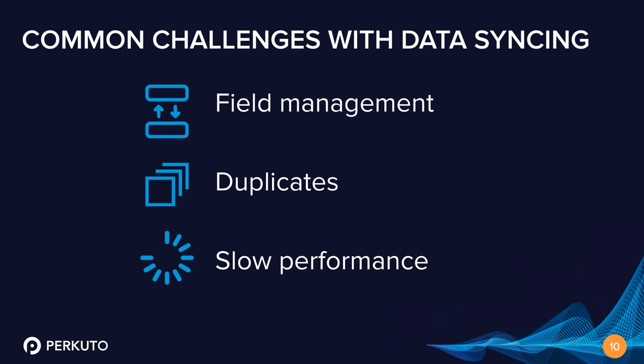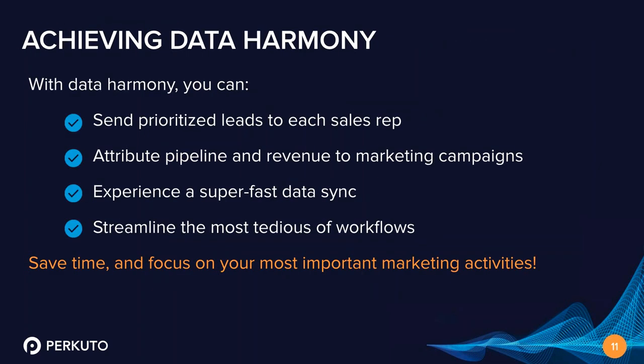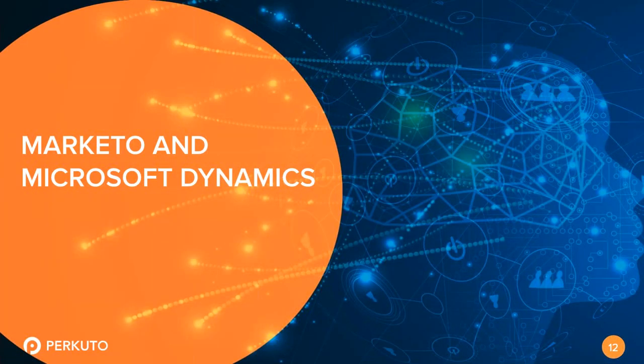These common challenges can be grouped into field management, duplicates, and slow performance. When you address these issues with your sync between Marketo and Dynamics, you can expect to achieve data harmony. This gives you ideas of what you can achieve: sending prioritized leads to each sales rep, attributing pipeline and revenue to marketing campaigns, experiencing fast data sync, and streamlining the most tedious workflows. Everything with this is about saving time and allowing you to focus on your most important marketing activities.